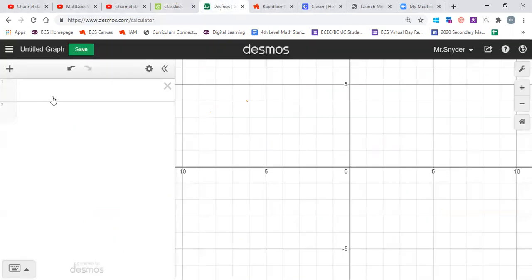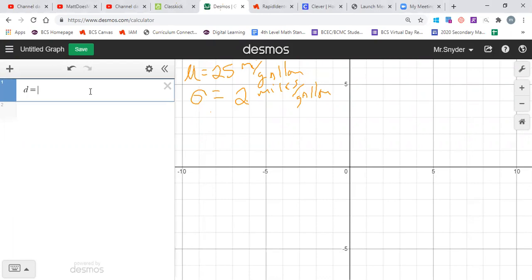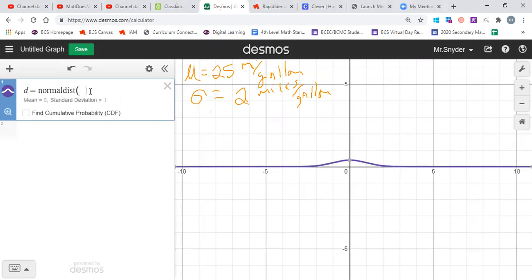So the first thing we want to do is just remember that the mean is 25, so mu is equal to 25 miles per gallon, and the standard deviation is equal to two miles per gallon. When we set this up it's really easy. We're going to come over to our graphing cells and put D equals, I'm going to name the distribution D. I'm going to type normal dist, and that's normal distribution. It'll ask for the mean and standard deviation. Well, the mean is 25 and the standard deviation is 2.